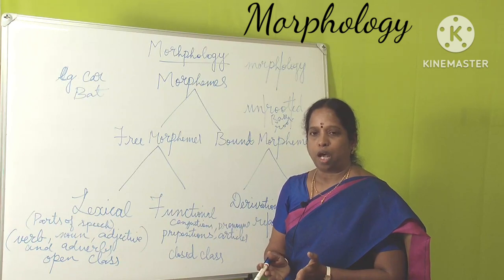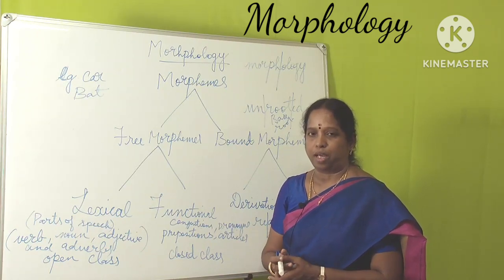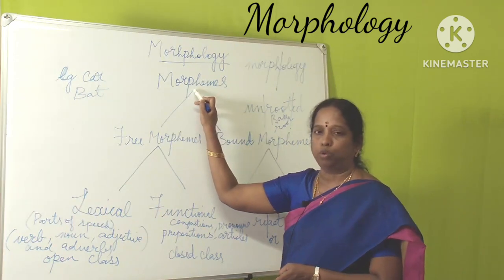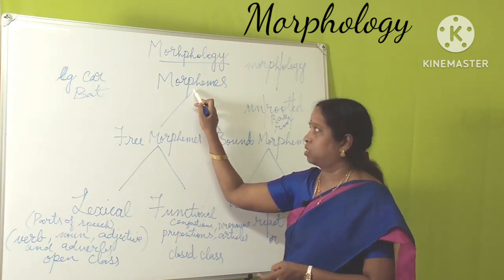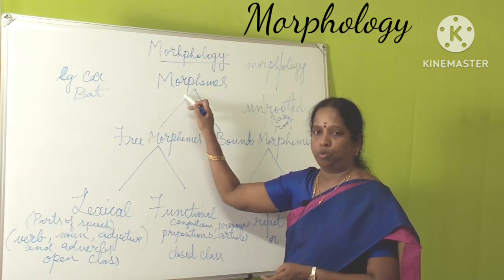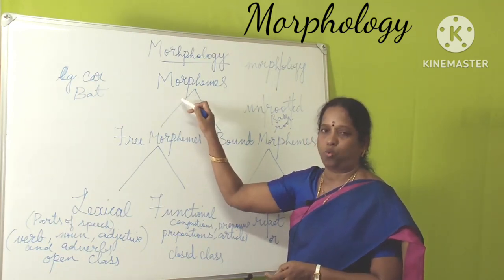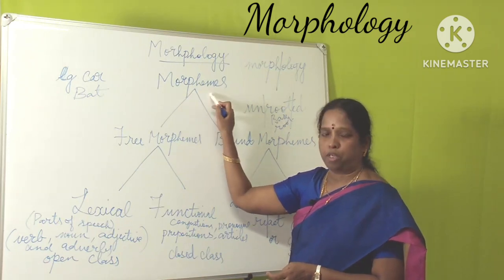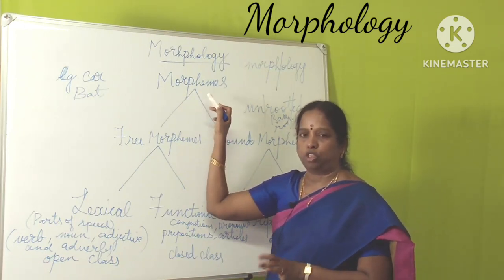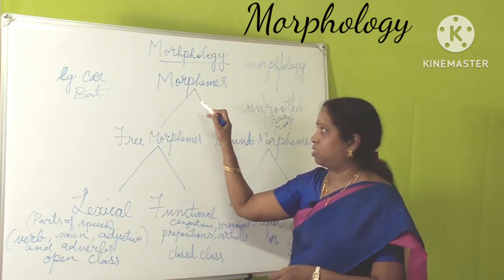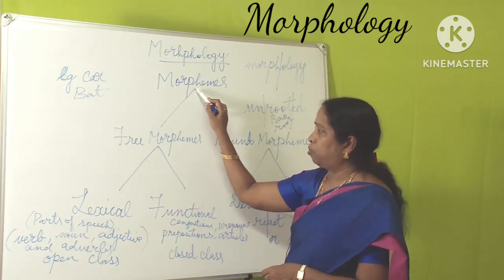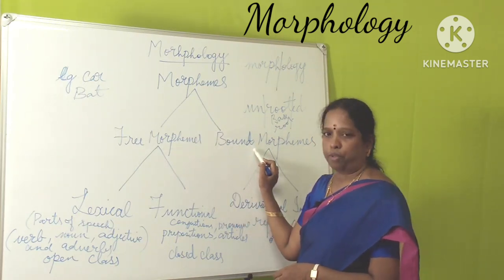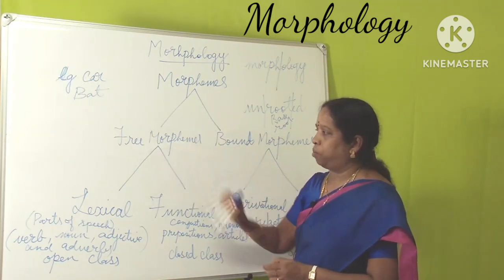All the syllables when put together form a word, and when words are put together they form a sentence. In a sentence, we try to identify the minimal unit of a word. That minimal unit or smallest unit in a sentence is called a morpheme. The definition: the minimal unit of a word in a sentence is called a morpheme.